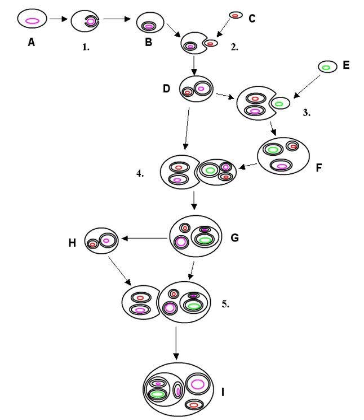Secondary endosymbionts exhibit a more recently developed association, are sometimes horizontally transferred between hosts, live in the hemolymph of the insects, not specialized bacteriocytes, and are not obligate.